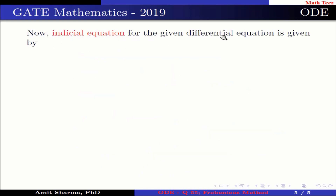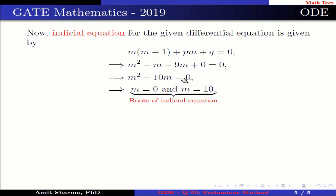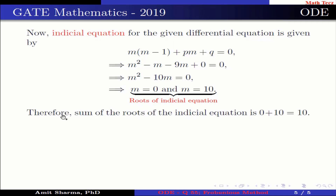Now, the indicial equation for the given differential equation is m(m − 1) + pm + q = 0, which implies m² − m − 9m + 0 = 0, which simplifies to m² − 10m = 0, giving m = 0 and m = 10. These are the roots of the indicial equation. Therefore, the sum of the roots is 0 + 10 = 10.